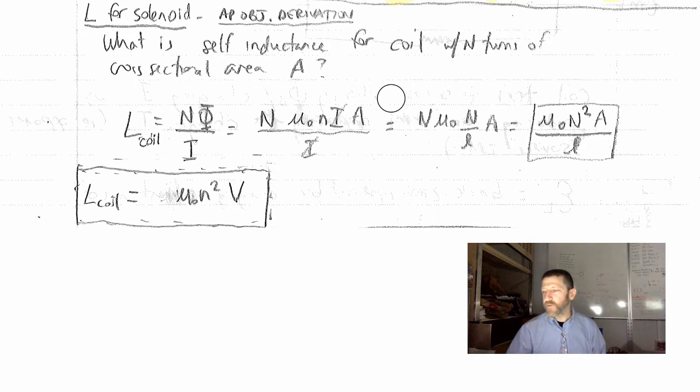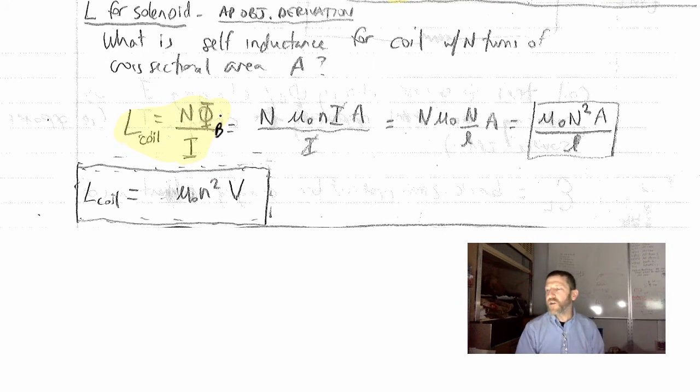A coil is, if we define the inductance like this, n times, this is magnetic flux, I should add that right there, there is our definition,